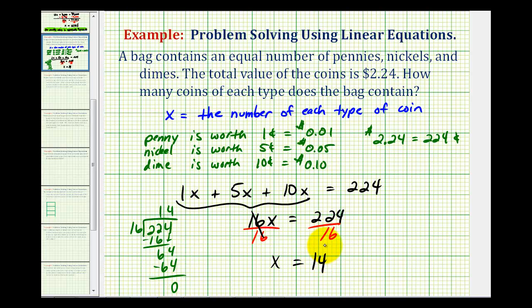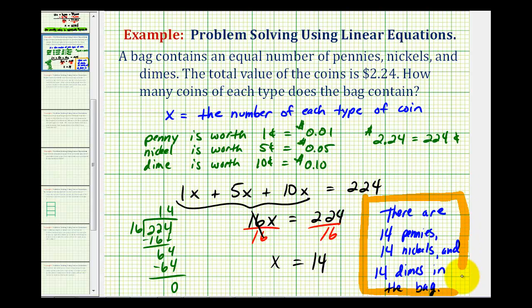Since x is equal to 14, this tells us that we have 14 pennies, 14 nickels, and 14 dimes for a total value of two dollars and twenty-four cents. I hope this explanation was helpful.